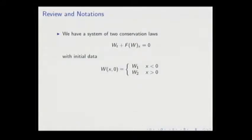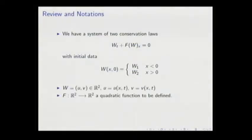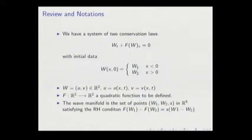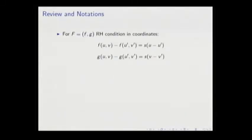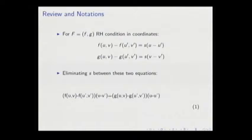Our problem is this, where w is a point in the plane depending on x and t. F is a quadratic function in the plane. The wave manifold is the set of triples in F5 satisfying the Rankine-Hugoniot condition. In coordinates, the Rankine-Hugoniot condition is given by these two equations. Eliminating S between these two equations, we have this equation. After discarding the trivial solution u equal u-prime, v equal v-prime, we get a manifold.